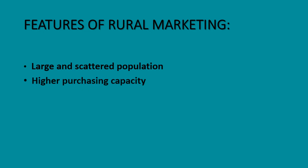Next is higher purchasing capacity, which is a plus point. The purchasing power of rural people is on the rise, and marketers have realized the potential of rural markets and are expanding their operations into rural areas. Next is low standard of living. The standard of living in rural areas is low and rural consumers have socio-economic backwardness. The main reasons behind this are low literacy levels and many other cultural factors.